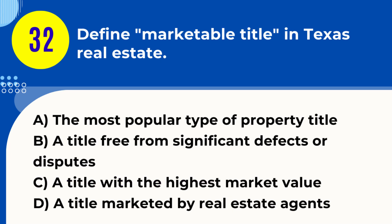Question 32. Define marketable title in Texas real estate. A. The most popular type of property title. B. A title free from significant defects or disputes. C. A title with the highest market value. D. A title marketed by real estate agents. Answer: B. A title free from significant defects or disputes. Explanation: A marketable title in Texas real estate is a title that is clear, free from significant defects, liens, or disputes, making it more attractive to buyers.